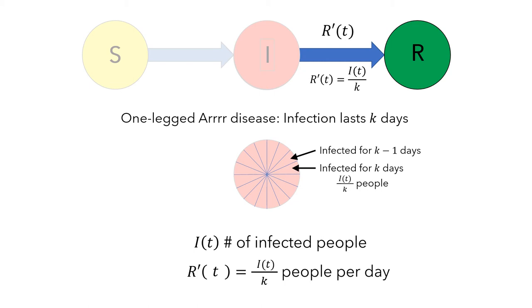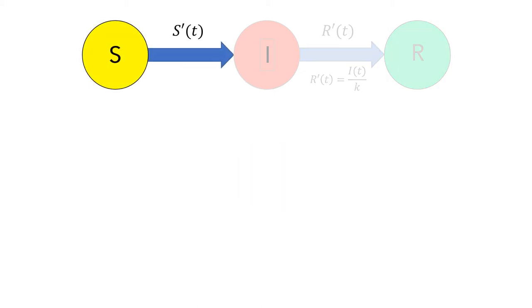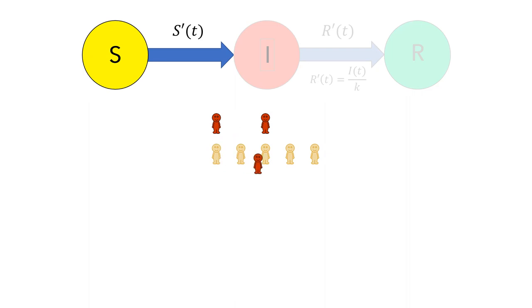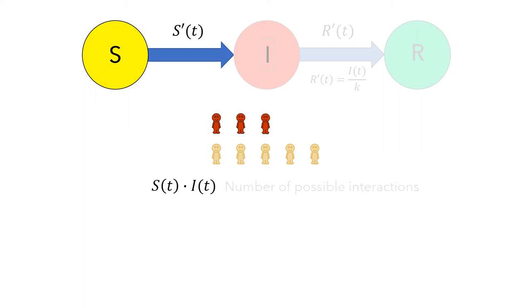Next, let's think about S'(t). To help us think about the rate at which the susceptible group becomes infected, let's imagine a simple scenario with 3 infected people and 5 susceptible people. The first infected person goes for a walk and could potentially infect all 5 of the susceptible people, and the same thing could happen with the other 2 infected people. So each infected person could interact with and infect up to 5 susceptible people. If we multiply the number of susceptible people by the number of infected people, we get the total number of possible interactions between susceptible and infected people, which will affect the rate we're interested in.